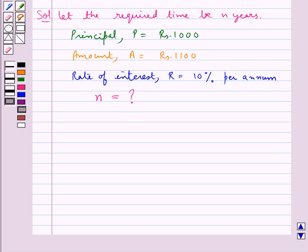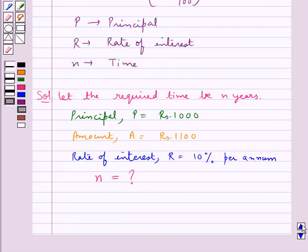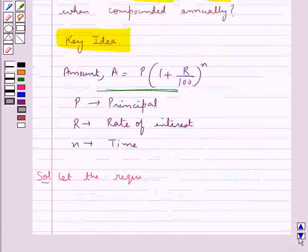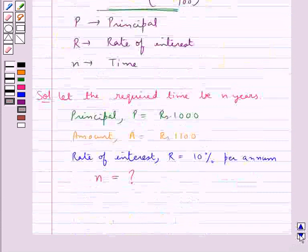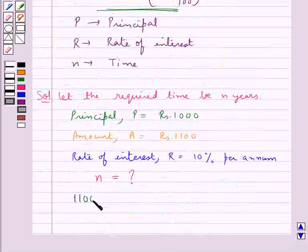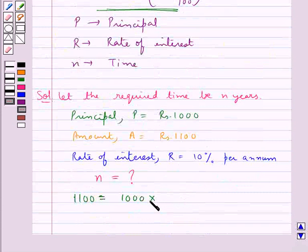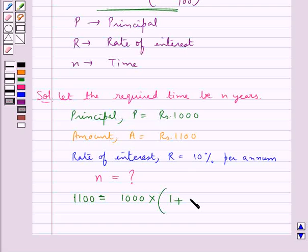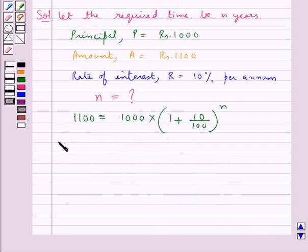Now, putting these values in the formula for amount, we get 1100 is equal to 1000 into 1 plus 10 upon 100 whole to the power N.